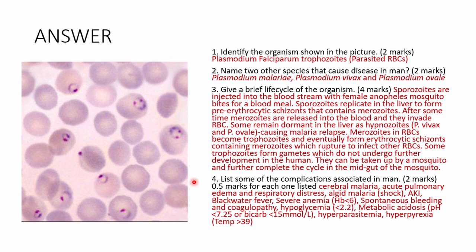The organism shown is Plasmodium falciparum — these are trophozoites parasitizing red blood cells, shown as ring forms. The other species include Plasmodium malariae, Plasmodium vivax, and Plasmodium ovale — pick any two.